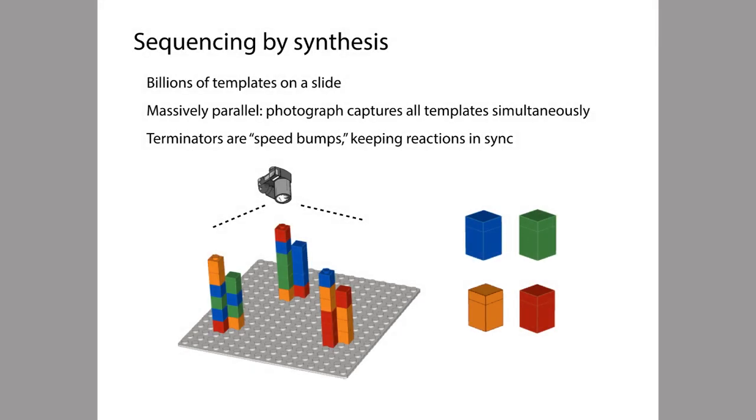So to sum up, some key facts about this technique are: first of all, we can put billions of these single-stranded templates all on a single slide. The fact that we can photograph all these strands at once is also very important because that's what makes the process massively parallel. And then finally, the terminators keep the polymerization reactions, the complementary strand building reactions, in sync, and then give us time to snap our photograph, which is the data that we use to infer the sequence of the templates.